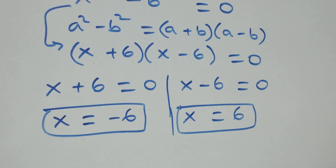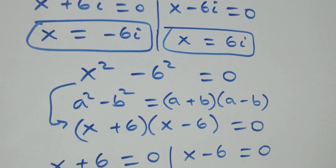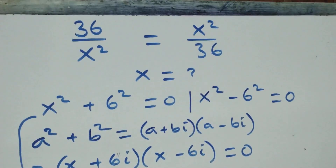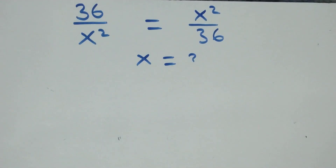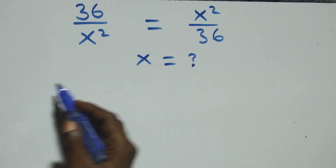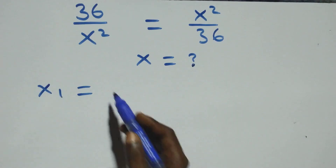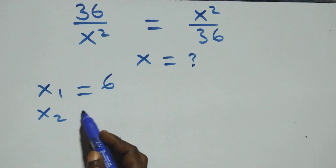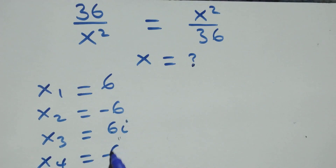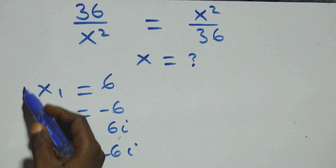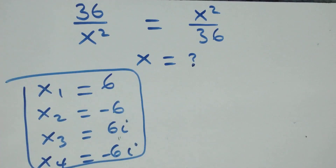Therefore, we have four solutions together — two real and two complex. Writing them out: x₁ equals 6, x₂ equals −6, x₃ equals 6i, and x₄ equals −6i. All together, we have four solutions: two real and two complex.